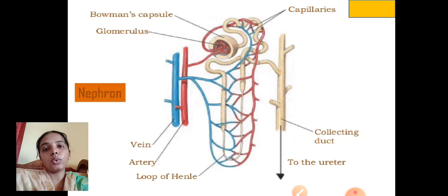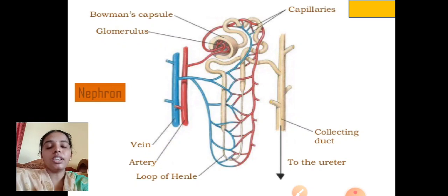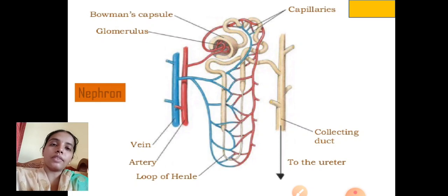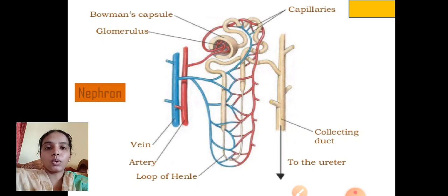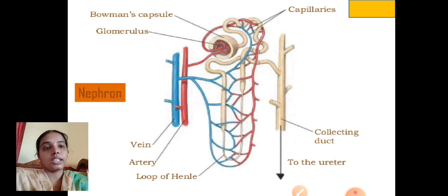The nephron is the structural and functional unit of the kidney. It consists of a cup-like structure called the Bowman's capsule, which contains a network of blood vessels called the glomerulus with afferent and efferent vessels. Primary urine is transferred from the Bowman's capsule to the proximal convoluted tubule, then to Henle's loop where electrolytes and water composition are separated to produce concentrated urine, and after reabsorption in the distal convoluted tubule it is transferred to the collecting duct.